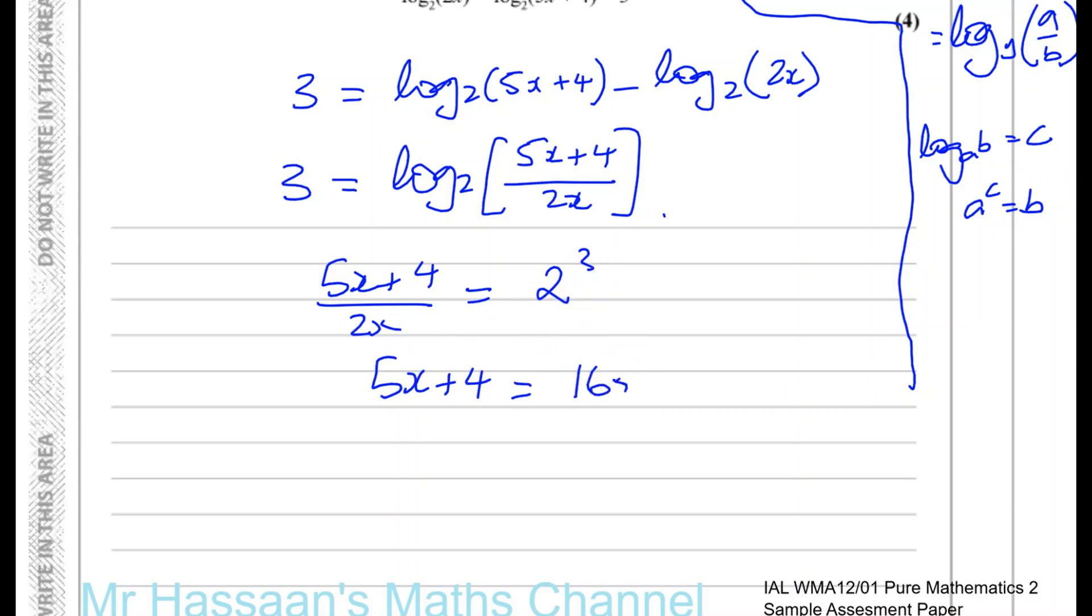Yeah 16x, 2 to the power of 3 remember is equal to 8. So then I can solve this equation. 4 is equal to 16x minus 5x, that's 11x, so 4 is equal to 11x. Therefore, x is equal to 4 over 11.